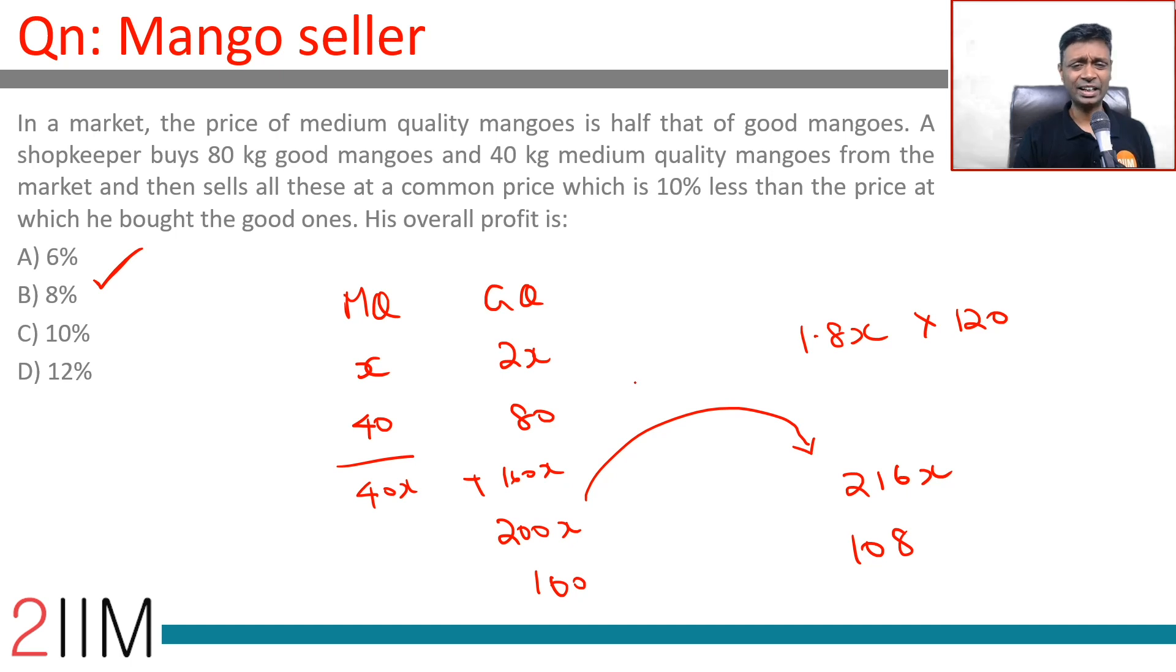Capture the data clearly and you're through. Medium quality is x, good quality is 2x. 80 kilograms of good, 40 kilograms of medium. Total cost is 40x plus 160x, which equals 200x. The selling price is 10% less than 2x, which is 1.8x. All 120 mangoes are sold at this price, giving a total selling price of 216x. He buys at 200x, sells at 216x, so his profit percentage is 8 percent.